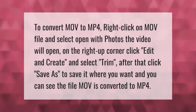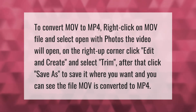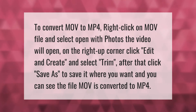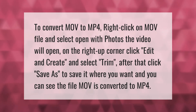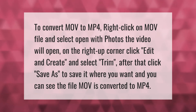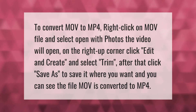To convert MOV to MP4, right-click on the MOV file and select Open With Photos. The video will open. In the upper right corner, click Edit and Create and select Trim. After that, click Save As to save it where you want, and the file will be converted from MOV to MP4.